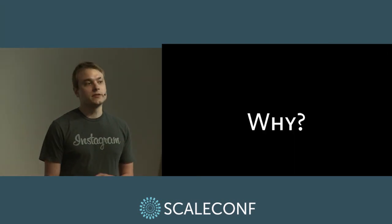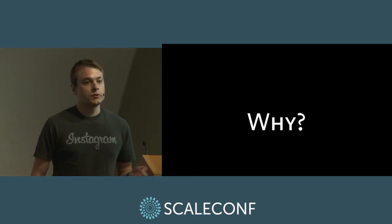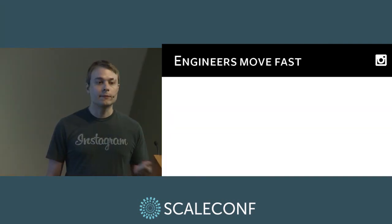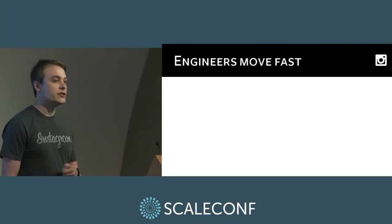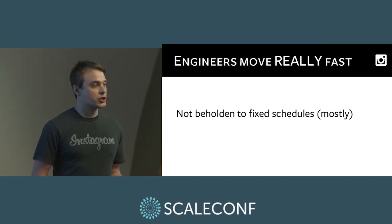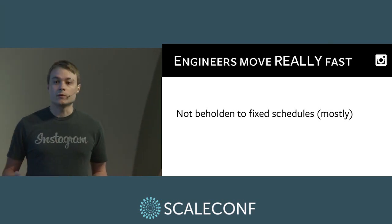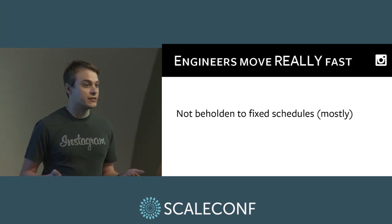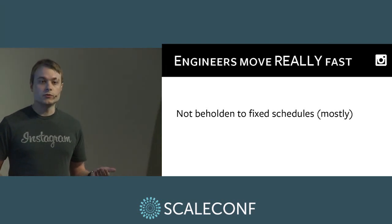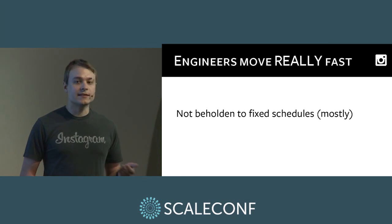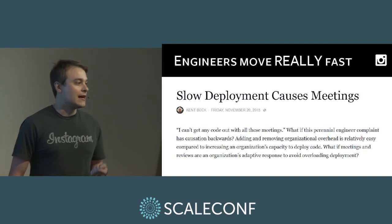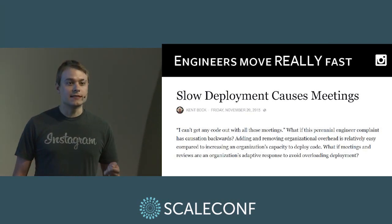So why do we do continuous deployment? What are the benefits which make it worth the time and effort to implement and maintain the system? The first advantage is that it allows our engineers to move fast — really fast. When engineers aren't beholden to a fixed push schedule, they can get changes out whenever they want. We do discourage landing outside of normal business hours for the sake of the on-calls, but otherwise engineers can choose when to get their code out. This means they don't waste time waiting for the next push — time which Ken Beck theorizes is inevitably filled with meetings.